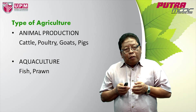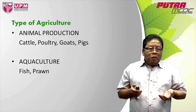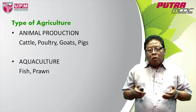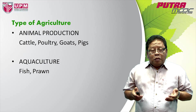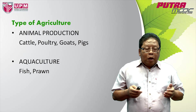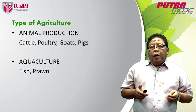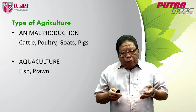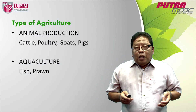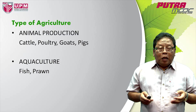Another type of agriculture is animal production. We have cattle, cows, poultry, goats, pigs or swine, among other examples. And we also have aquaculture — aqua means water — that means production of species such as fish, prawns, and many other aquatic species in the water.